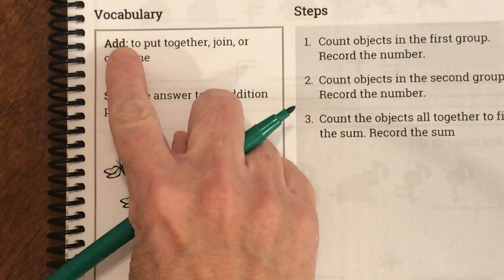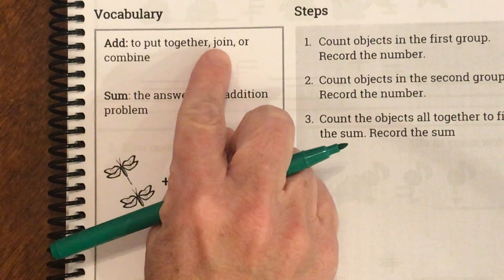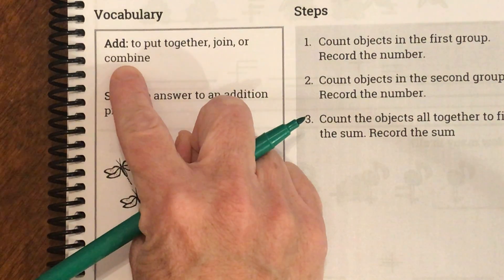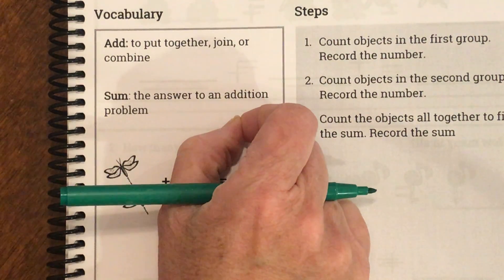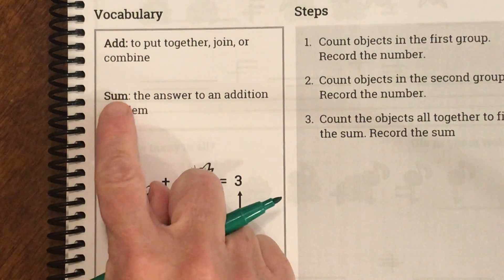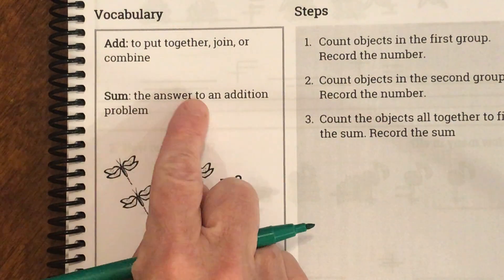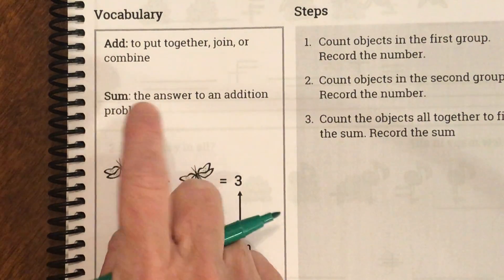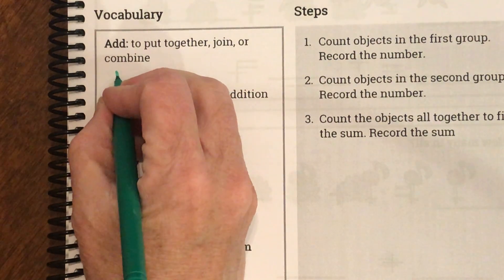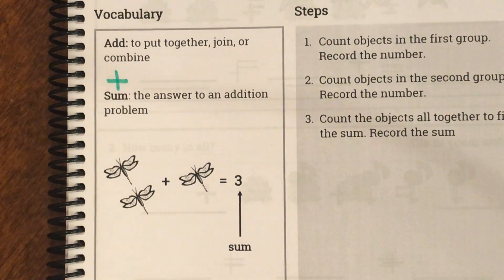Let's look at our vocabulary. Our first word says 'add' — it means to put together, join, or combine. So we're going to take two numbers and put them together. And then our next word says 'sum' — the answer to an addition problem. So sum is our answer. Every time I see the word sum, I put an addition sign on top of it.